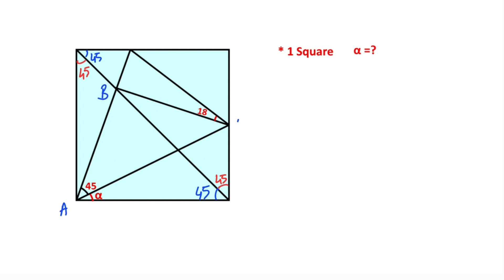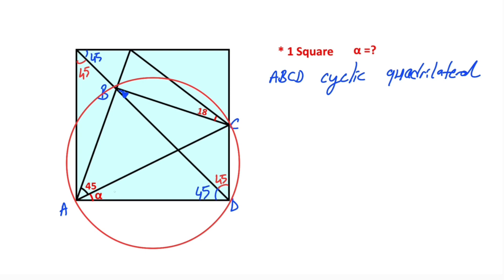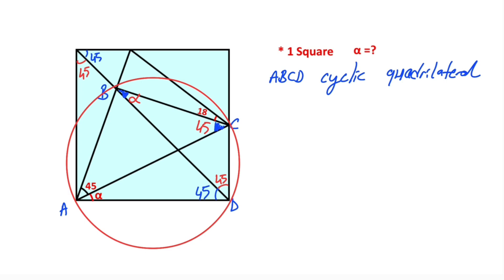Let's call the points A, B, C, and D. That means ABCD is a cyclic quadrilateral. So if we draw the circle of this cyclic quadrilateral, notice that opposite of alpha and angle DBC have the same arc. That means angle DBC must be equal to alpha. And notice that opposite of angle BCA and 45 degrees have the same arc, likewise angle BCA must be equal to 45 degrees.